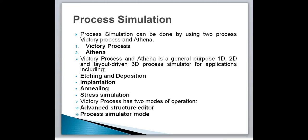Stress simulation is done with stress history for stress engineering. Victory Process has two modes of operation: the first is the Advanced Structure Editor and the second is the Process Simulator mode. The Advanced Structure Editor mode is used for fast prototyping of 3D structures. The Process Simulation mode is used for level-based process simulation and is more suited to detailed process-based simulation such as complex physically-based etching, deposition, ion beam experiments, and stress-dependent oxidation analysis.